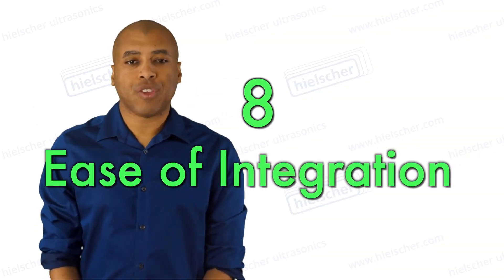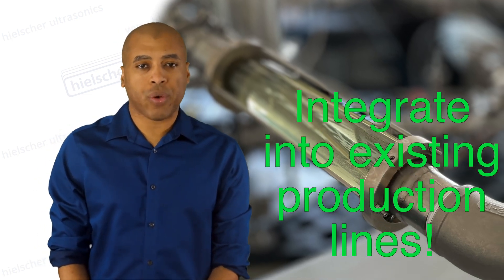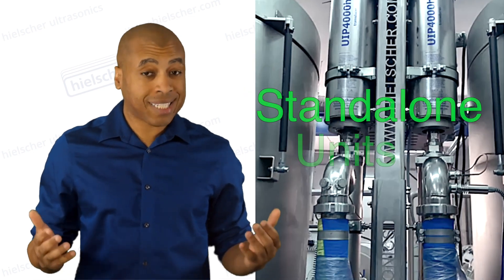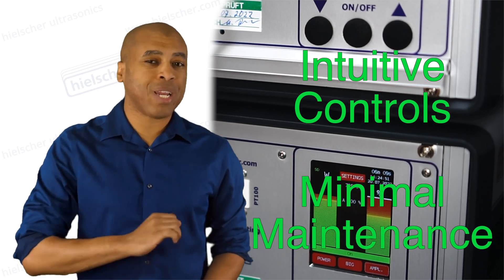Number eight, ease of integration. Hielscher ultrasonic homogenizers can be easily integrated into existing production lines or used as standalone units. They are designed for user-friendly operation with intuitive controls and minimal maintenance requirements.